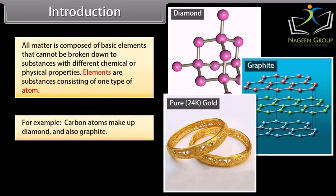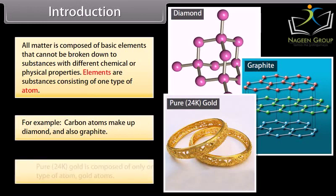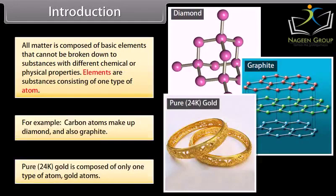For example, carbon atoms make up diamond and also graphite. Pure 24 karat gold is composed of only one type of atom, gold atoms.